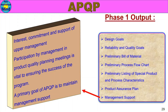APQP Phase 1 is the Plan and Define Program phase — covering what the inputs, outputs, and activities are. This is APQP Part 3 video. If you like this video, please like and share. If you like this channel, please subscribe and click on the bell icon for notifications. Please leave any questions in the comments. See you in the next video. Thank you!